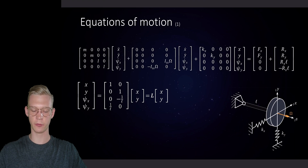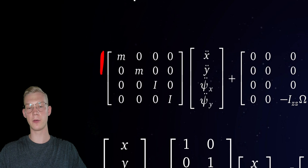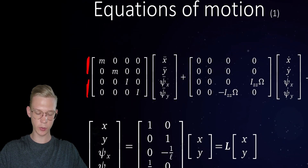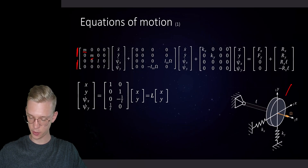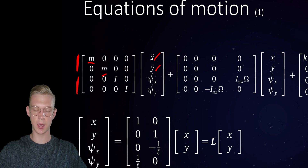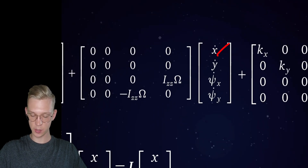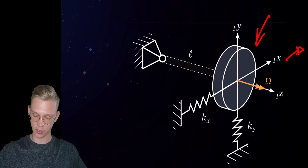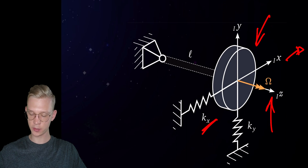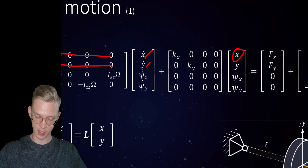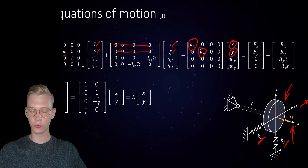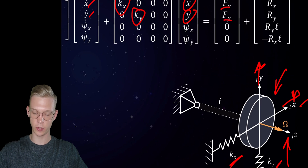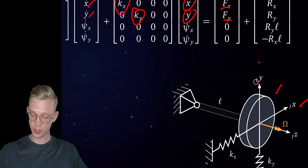Now let's look at our equations of motion. The first two rows use Newton's equation and the last two cover rotation via the Euler part. For Newton: we have the mass of our rotor with acceleration in x and y. There is no damping, so x-dot and y-dot terms are zero, but we have springs. Moving in x gives spring force kx times x, and in y gives ky times y. We also have applied forces Fx and Fy.